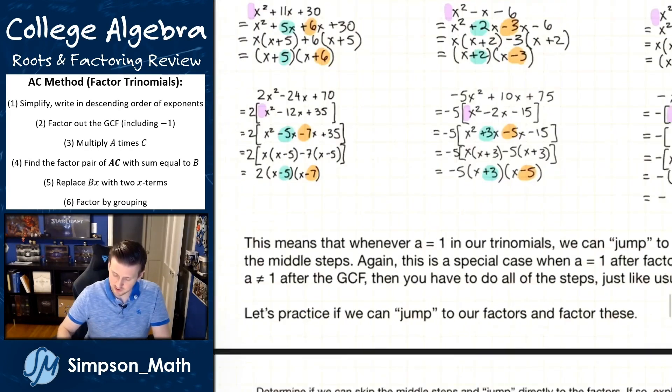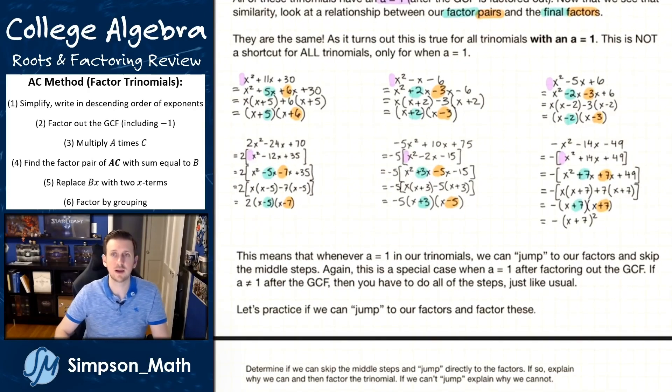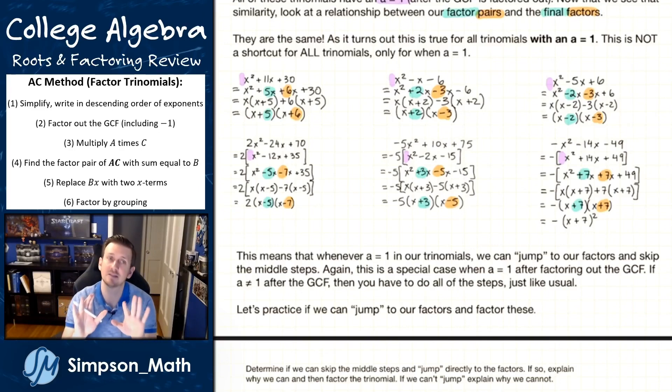So what's going on here is that whenever we see an A value of one, we can bypass those middle steps completely. Now again, this is a special case when A equals one. So whenever you see A equals one, you go, oh, goody. This is just going to make it be a little bit easier.